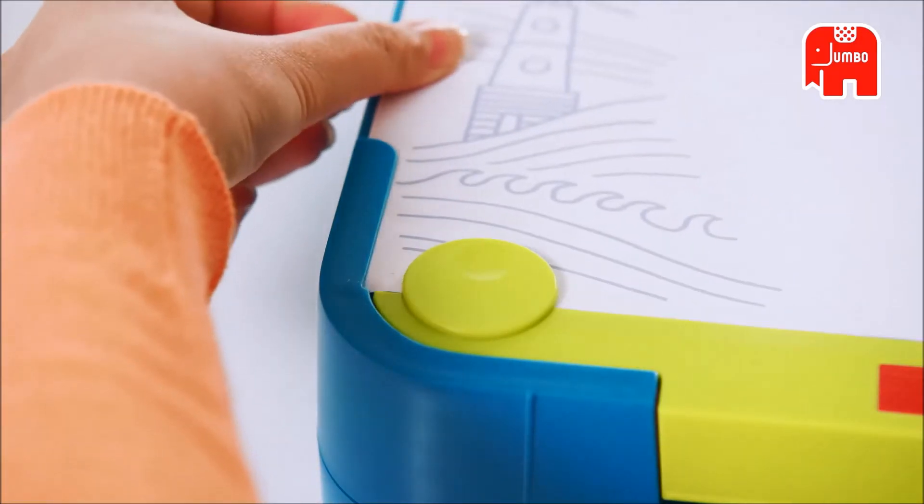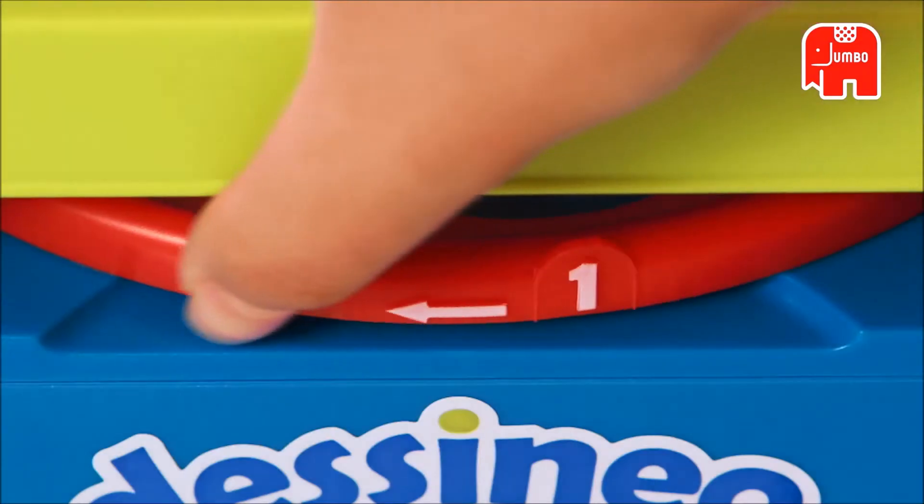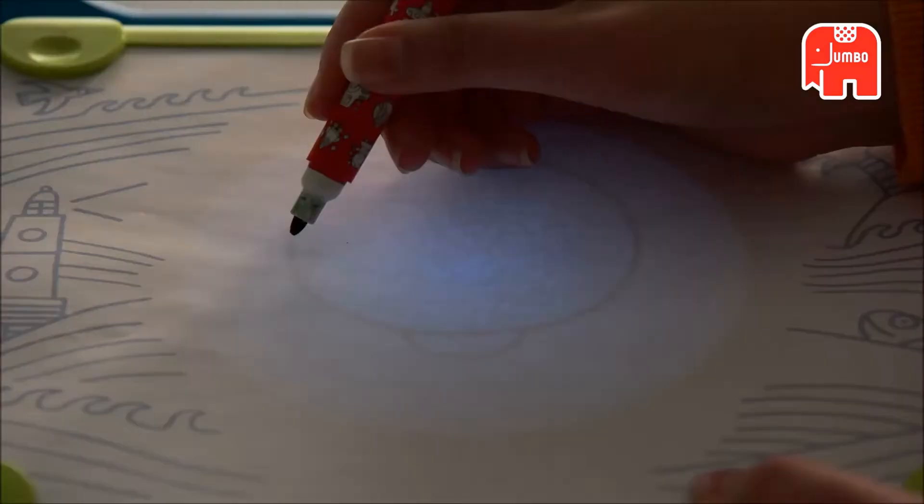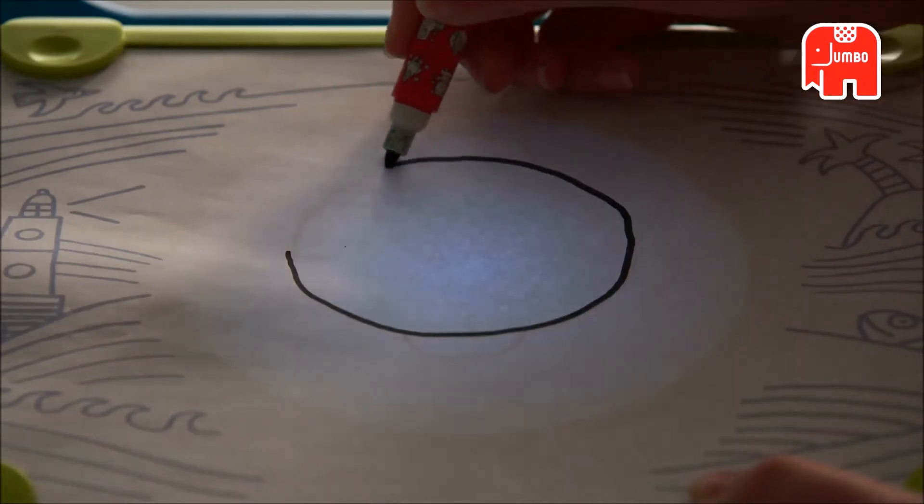Place a sheet of drawing paper on the top of the lightbox using the four mounting points. Turn the dial to the figure 1. The first step of the drawing will now be visible.